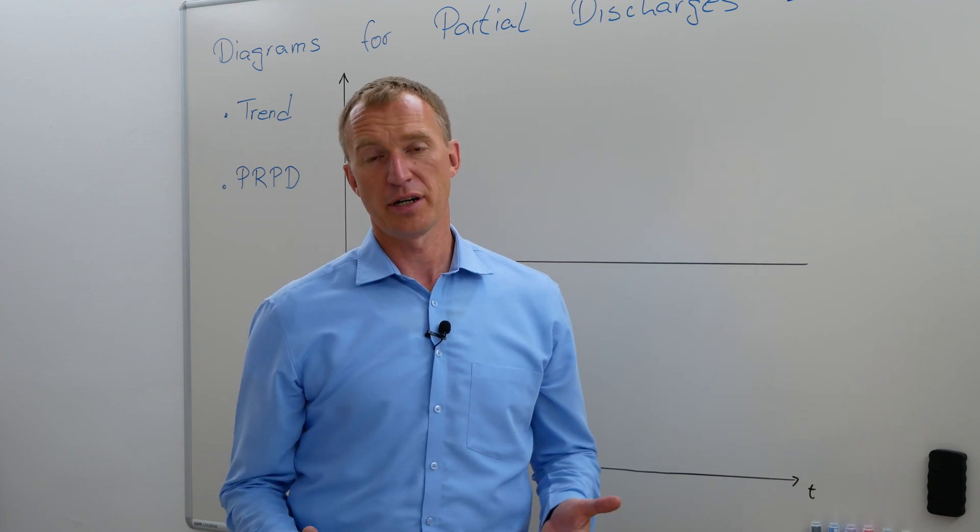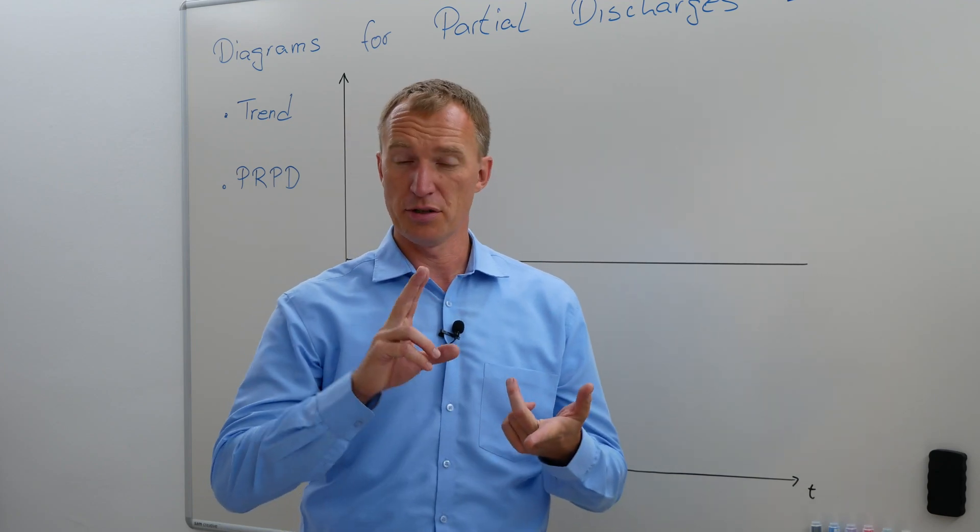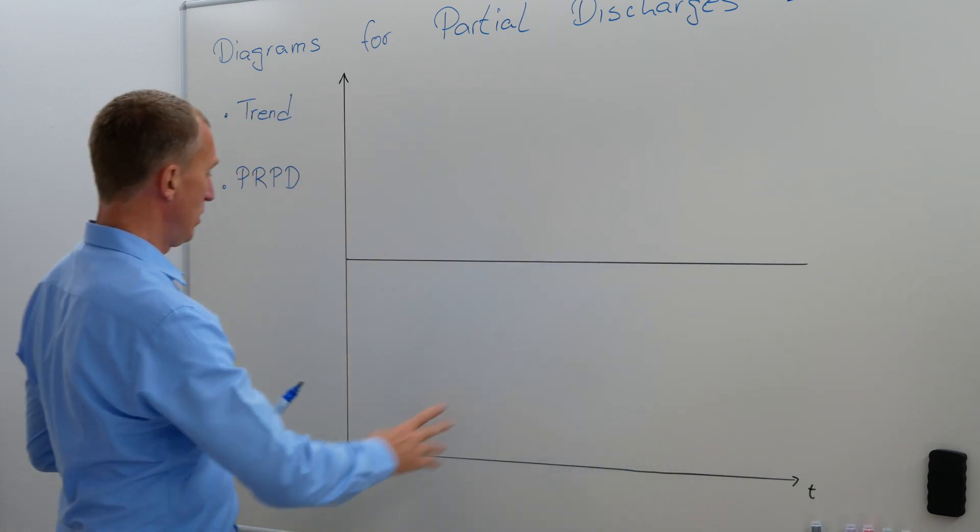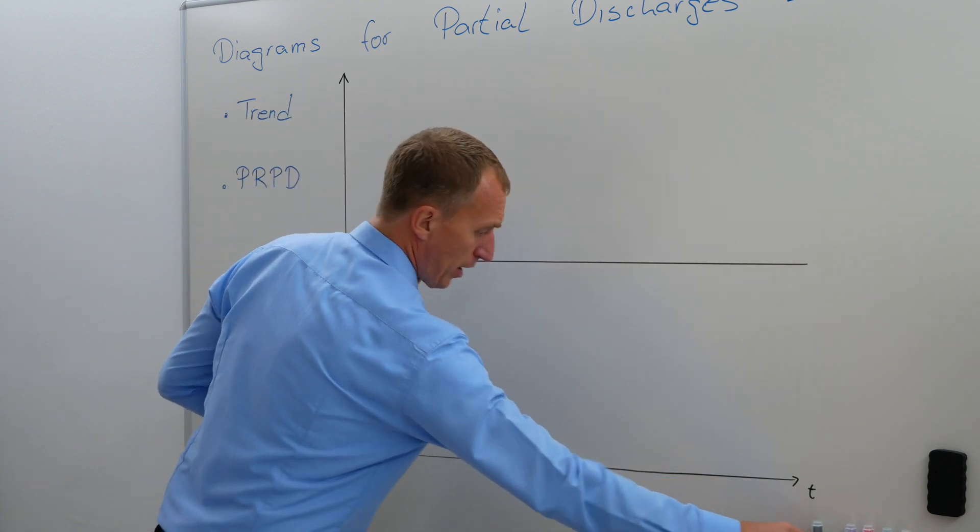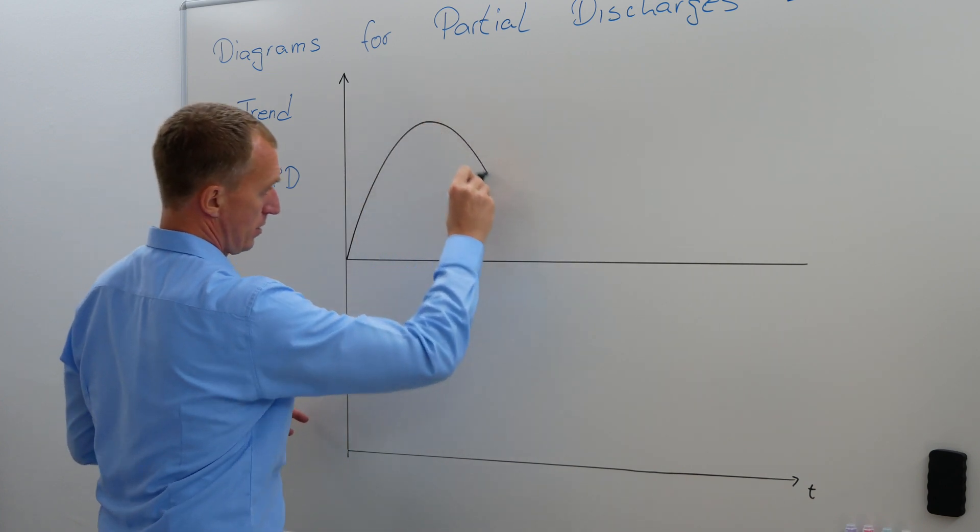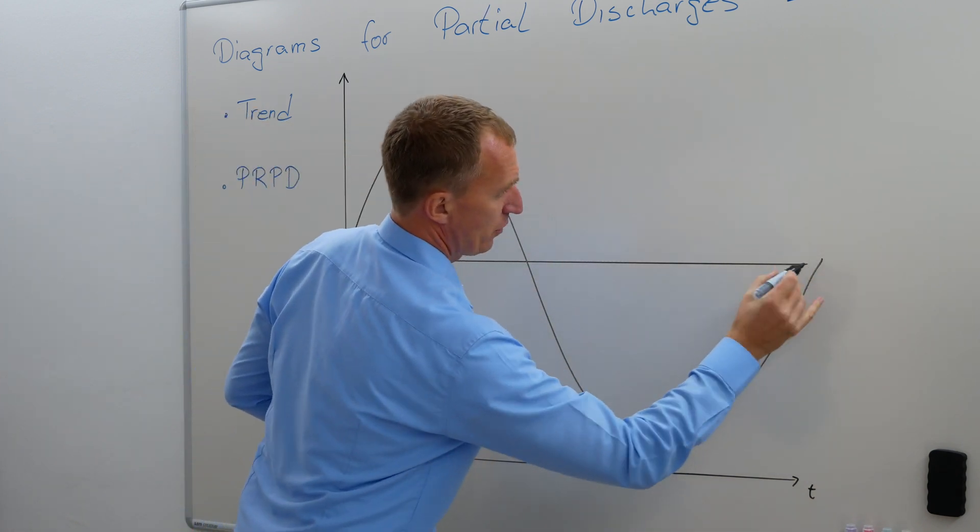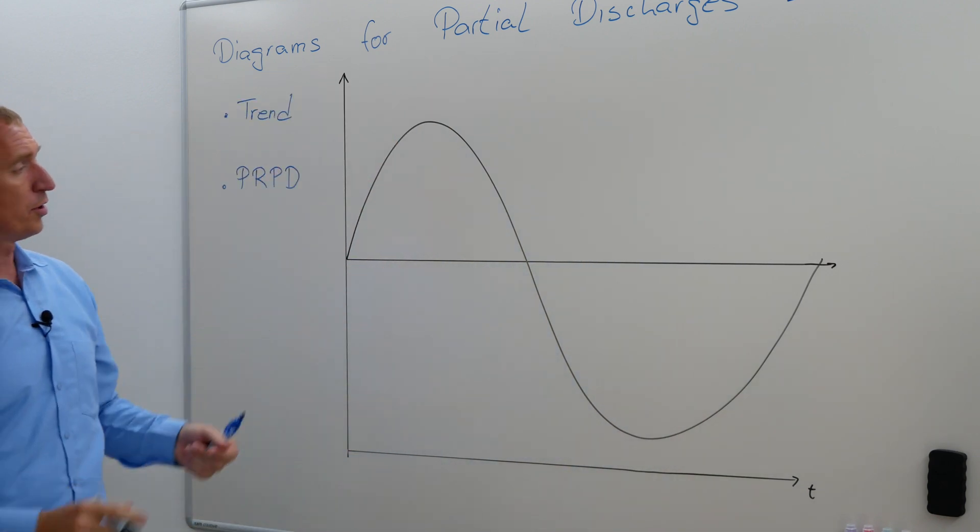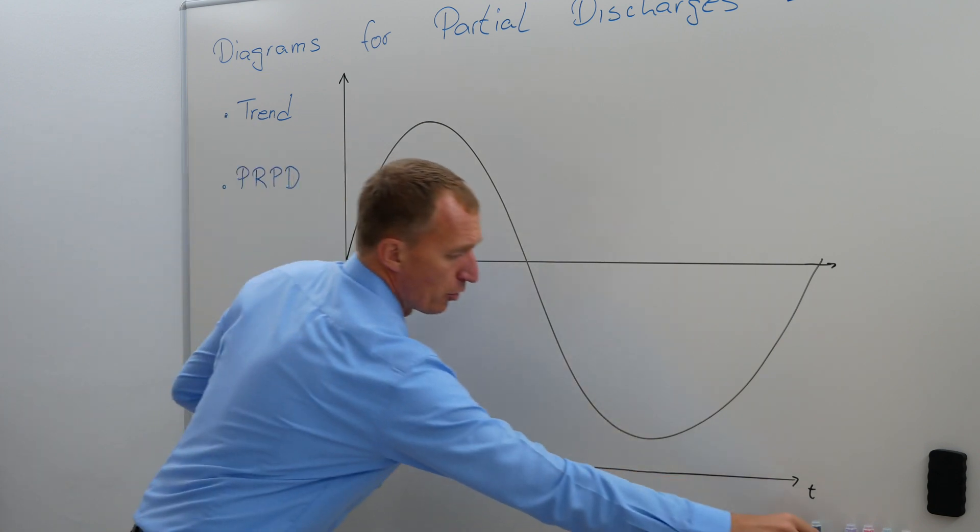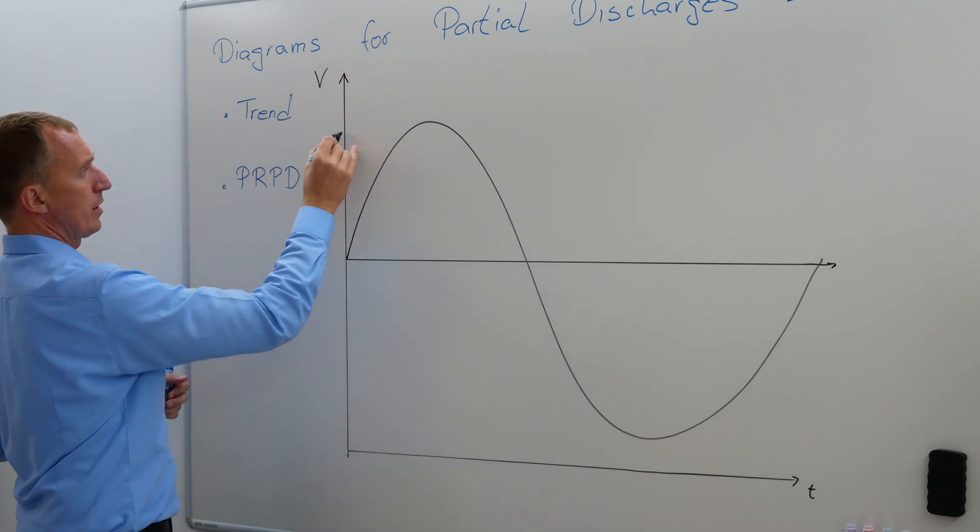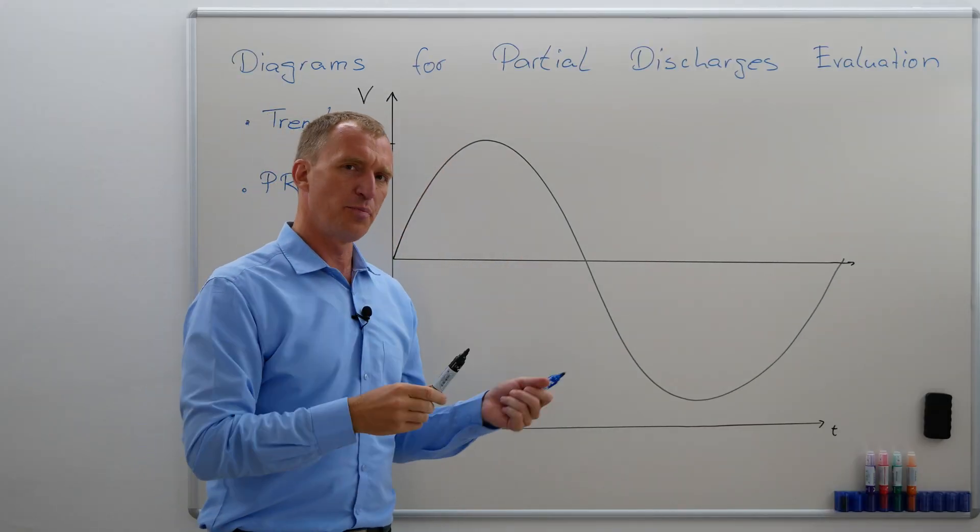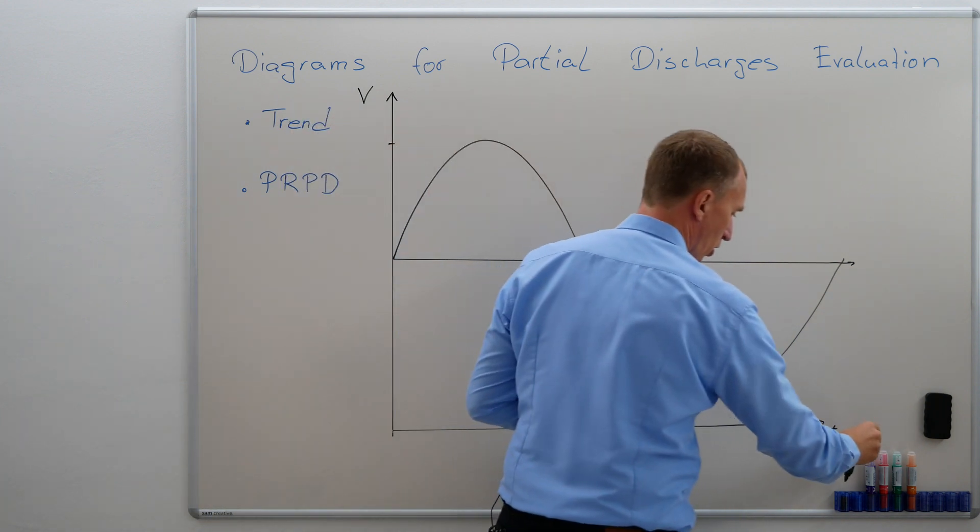For a phase-resolved partial discharge diagram, we need two information: we need the information of charge and we need the correct information of time. First of all, this would be time, and over here I'm going to plot my 50 or 60 hertz voltage. This is supposed to be a sinus. This would be our voltage, our testing voltage, doesn't really matter how many kilovolts. What matters is how a PRPD diagram is going to be built or made.